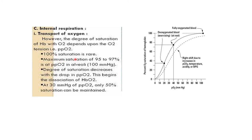There are some conditions: 100% saturation is rare. Maximum saturation of 95 to 97% occurs at partial pressure in alveoli — meaning 95 to 97% of oxygen can be carried by the blood. The degree of saturation decreases with a drop in oxygen. At 30 mm Hg of partial pressure of oxygen, only 50% saturation can occur.